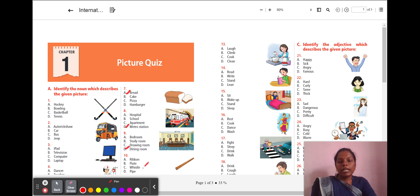Next, seventh question. It is a kind of food item. What is the name of it? A. Bread B. Cake C. Pizza D. Hamburger. And your answer is A. Bread. Eighth question. Look at the picture. Where is this location? It is a hospital or school or apartment or metro station. Can you find a train over here? Yes, it is a metro station. The answer is D.